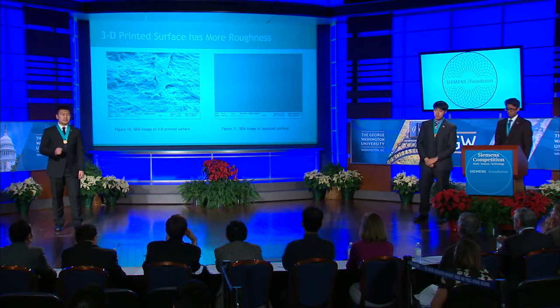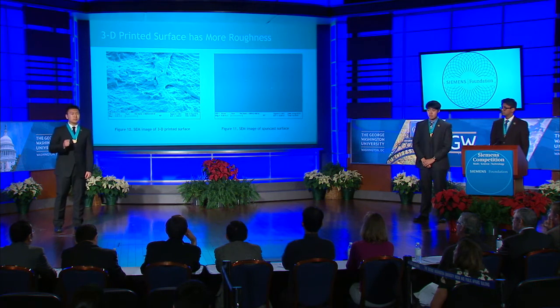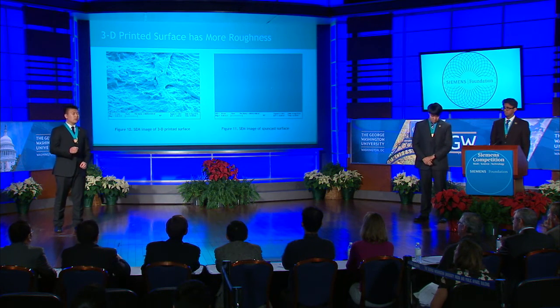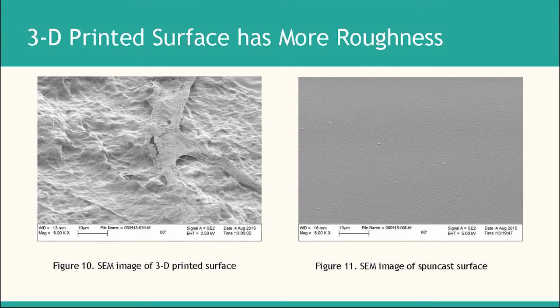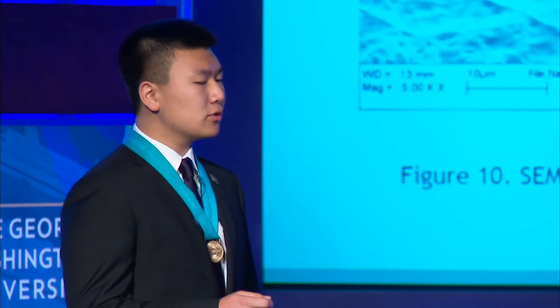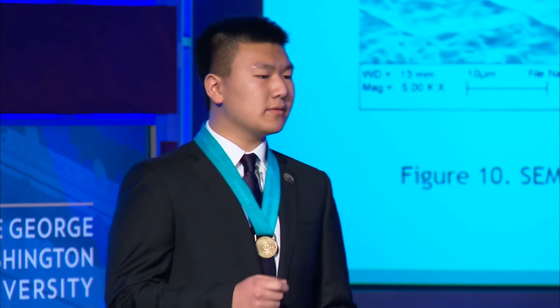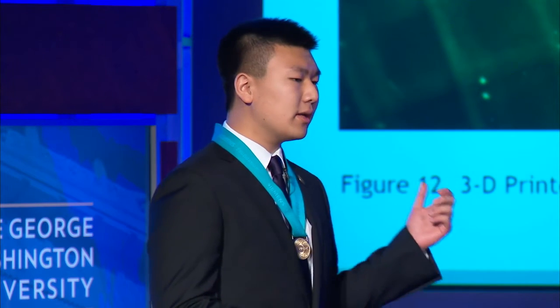Based on these results, we decided to use the 230P printer to proceed with our experiment comparing spun cast scaffolds with 3D printed PLA scaffolds. The 3D printed scaffold on the left is much more rough in surface topography compared to the spun cast scaffold. After 24 hours of cell growth, fluorescent microscopy revealed similar levels of cell adhesion for both scaffolds.